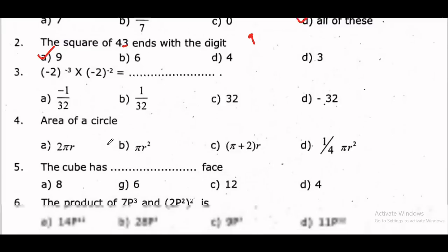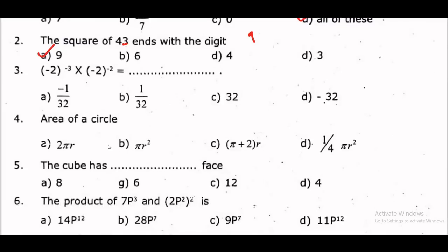Next, third one: (-2)^(-3) into (-2)^(-2). Here, the bases are the same (-2), so we add the exponents: -3 plus -2 gives (-2)^(-5). That equals 1 by 32, which is minus 1 by 32. Option A.